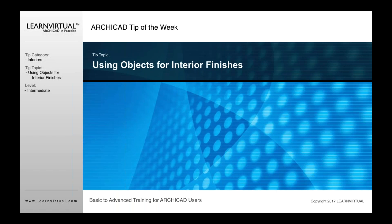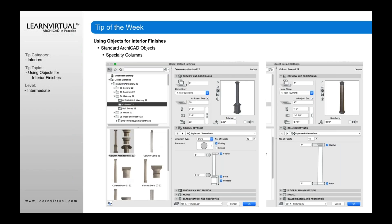Our tip of the week is using objects for interior finishes. One of the things I always want to point out is that there are a lot of ArchiCAD objects that can do many, many things. So before you start creating custom objects and custom elements, sometimes it's good to look through and say, is there a specialty column, for example, that I could use here? There are specialty columns in ArchiCAD that have a variety of parameters available to you.